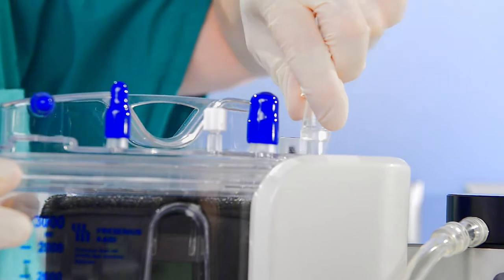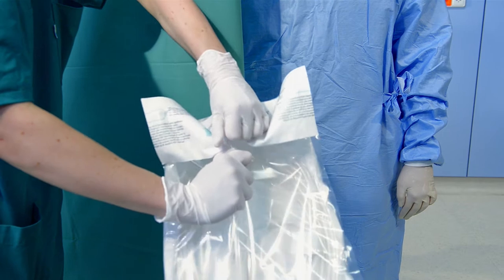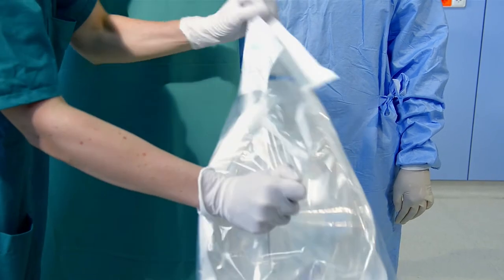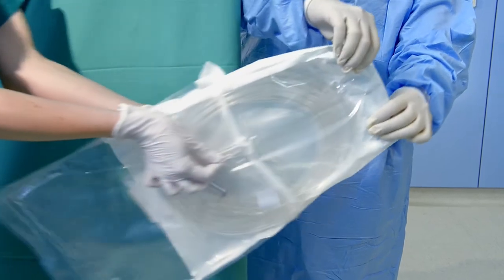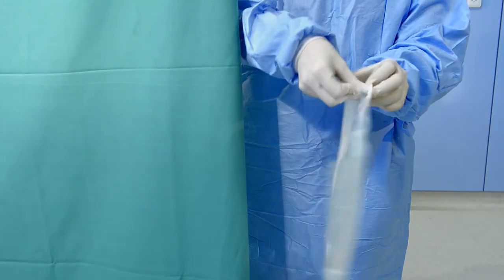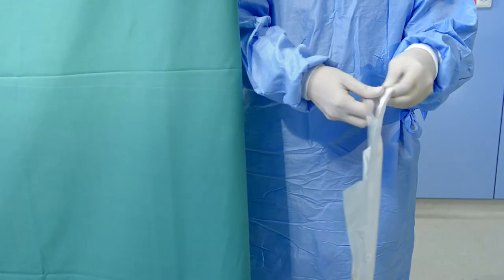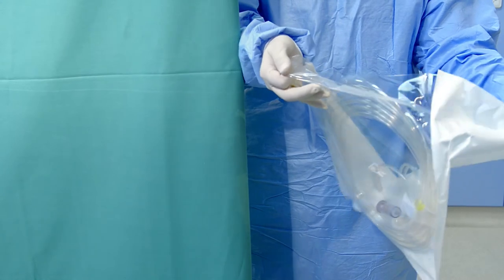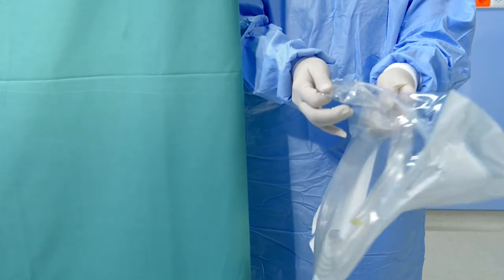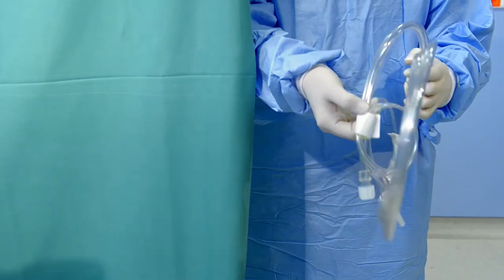The double lumen suction line must be unpacked and prepared at the sterile field. Open the outer packaging. The sterile nurse should take the inner sterile packaging without touching the outer blister pack. The ATS suction line can be unpacked and prepared with suction tip at the sterile field. The reservoir connection and drip chamber with spike should be handed out to the anesthesia team over the towel.